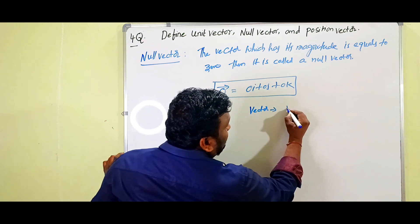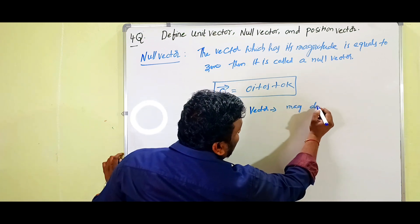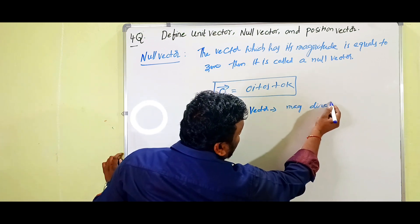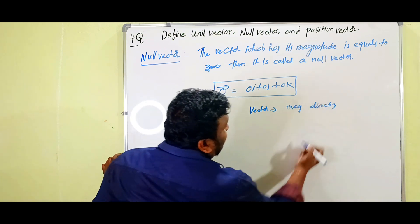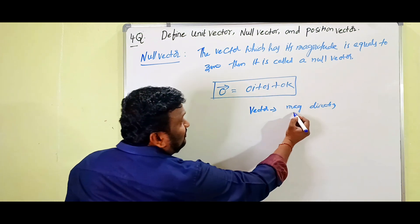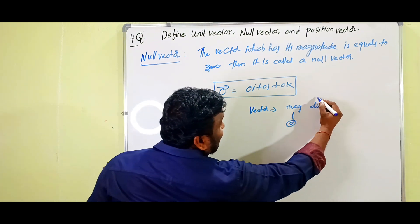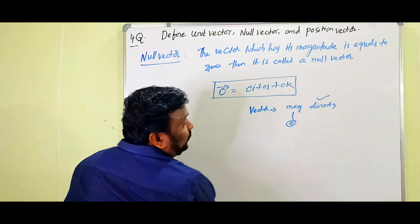A regular vector has both magnitude and direction. But for a null vector, the magnitude is zero. However, direction is still there.